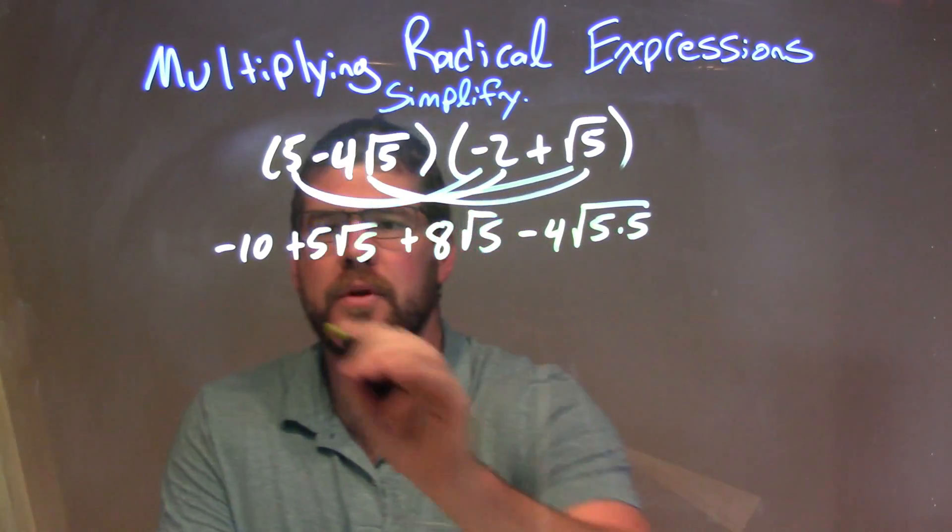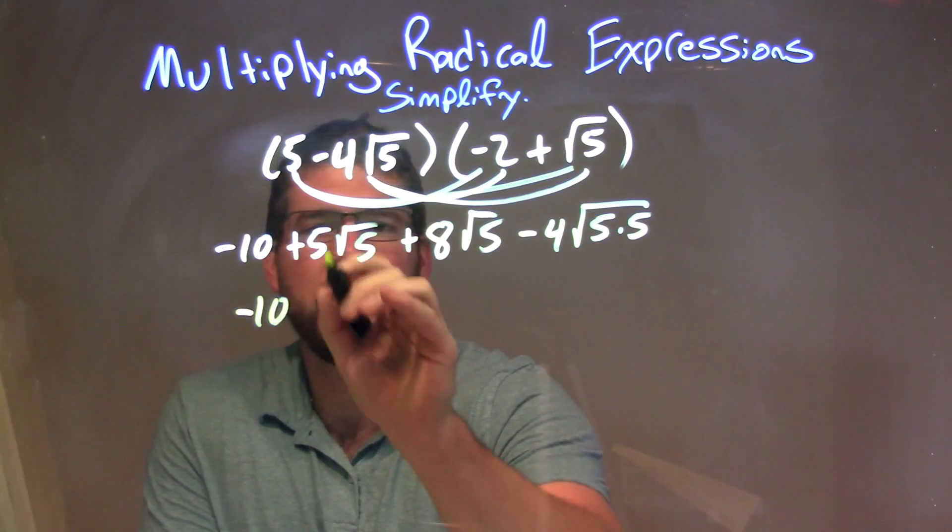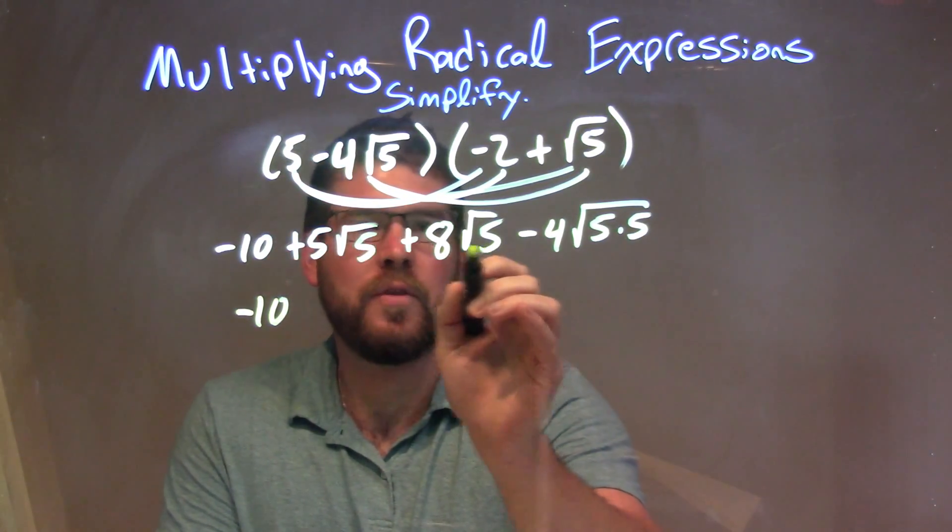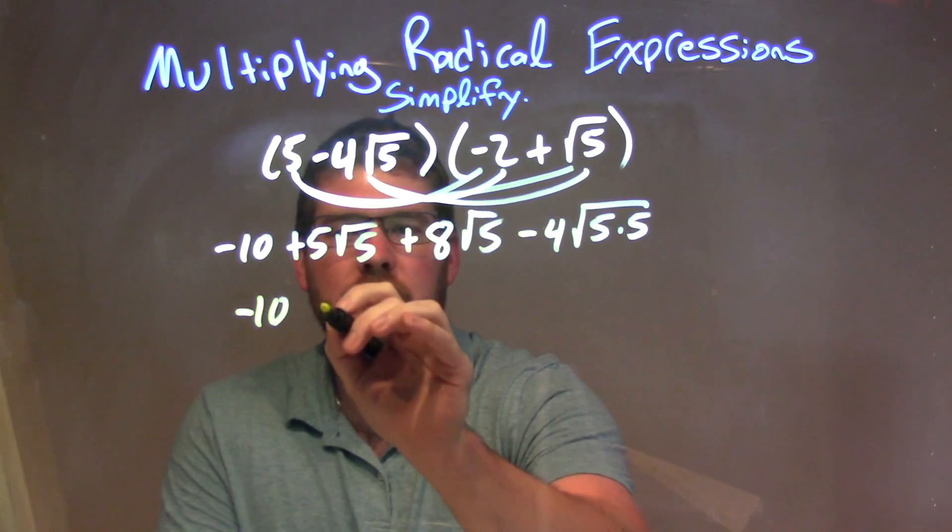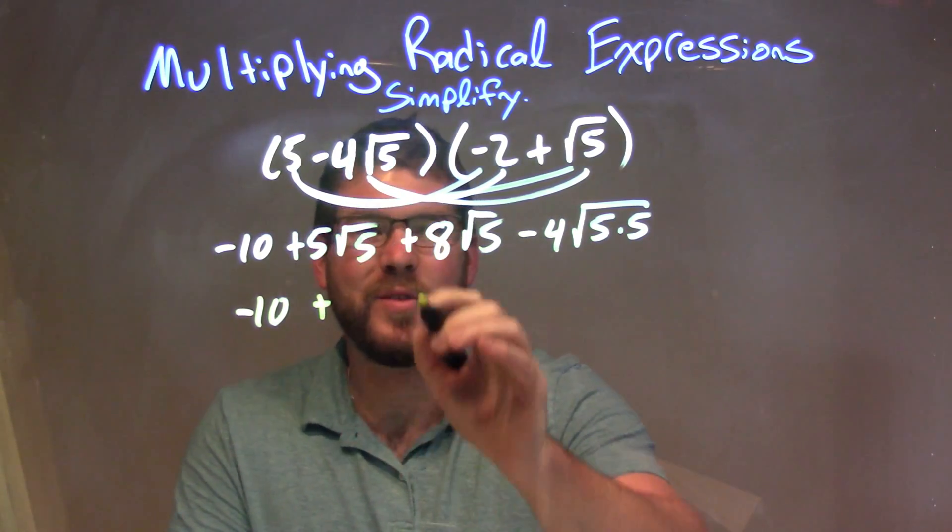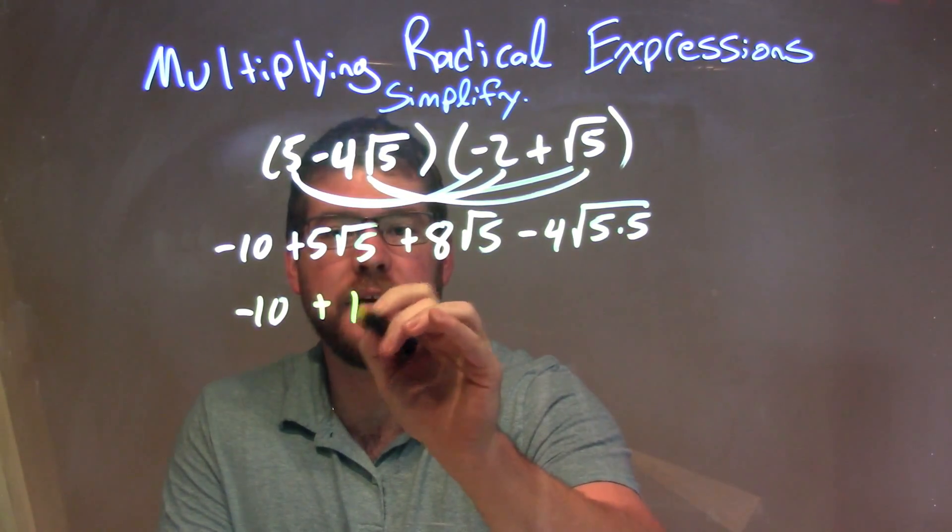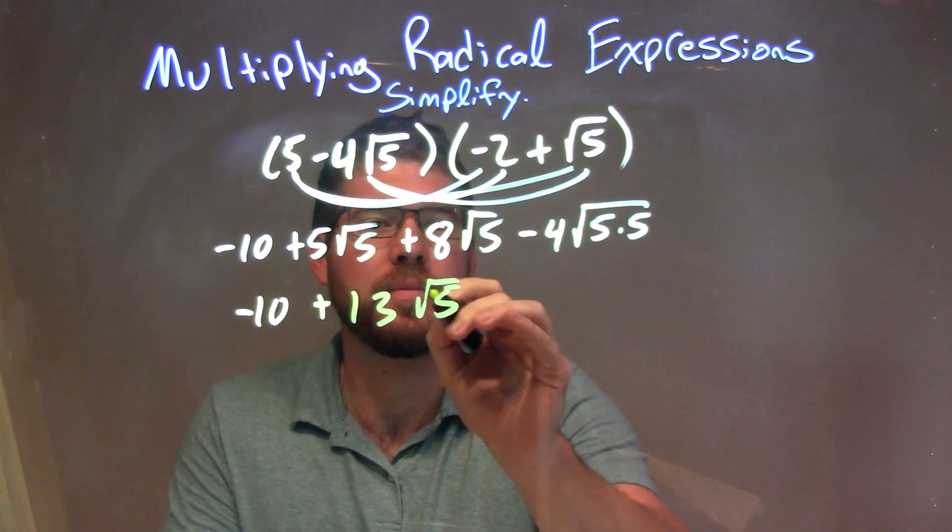So now we can simplify a little bit. We have a negative 10 right there, but now we both have square roots of 5. So we can combine these two, look at the numbers out front. 5 plus 8 is 13, so we have 13 square root of 5 here.